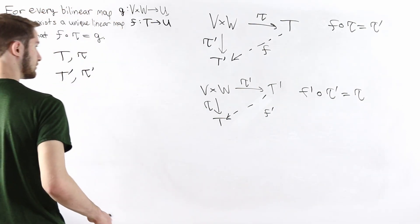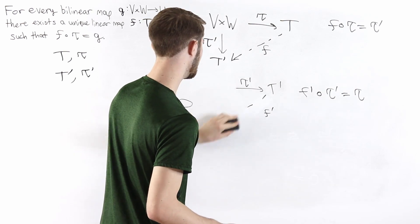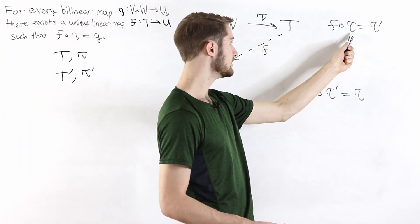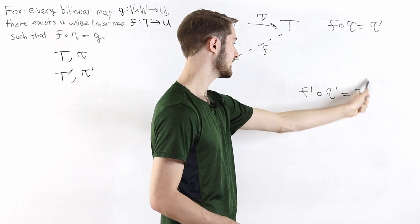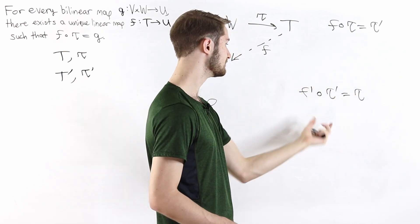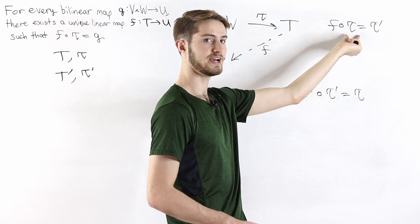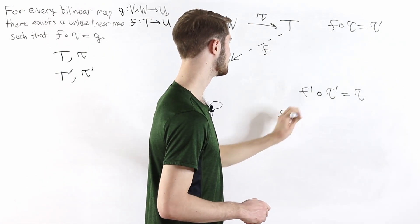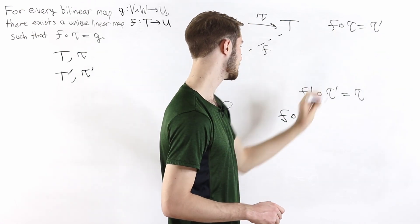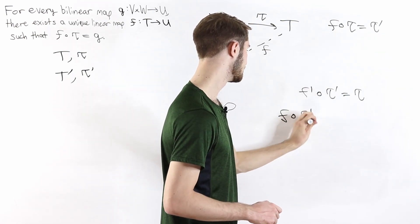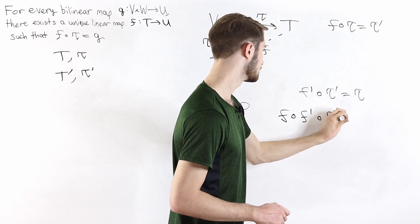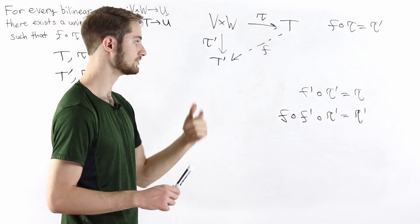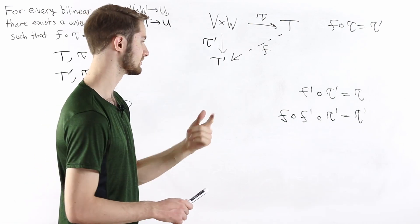Combining these two equations: from f composed with tau equals tau prime, and substituting tau equals f prime composed with tau prime, we get f composed with f prime composed with tau prime equals tau prime. Similarly, substituting in the other direction gives f prime composed with f composed with tau equals tau.